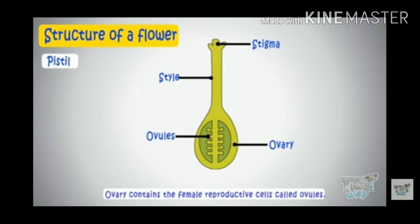This is the female reproductive part of a flower. This part comprises of three parts: the topmost sticky part is known as stigma, a tube-like structure which is known as style, and the swollen part at the base is known as ovary. This swollen part consists of the female gamete which is known as egg or ovules.